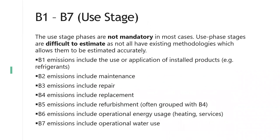Use stage emissions are not mandatory in most cases — it really depends on what you're trying to calculate. Some certification schemes do ask for this, and you could use a scenario or energy data from building information models. Use phase can be quite difficult to estimate because not all lifecycle stages have existing methodologies that allow you to estimate them accurately, especially not in early phase when you don't have much information available yet. When we do B1 use phase emissions in OneClickLCA, this includes anything regarding the user application of installed products. One of the biggest B1 use phase groups is refrigerants — if we have HVAC machinery for heating and cooling, it uses refrigerants, which can be quite polluting.